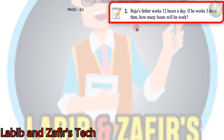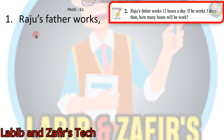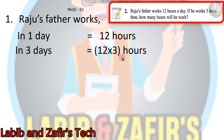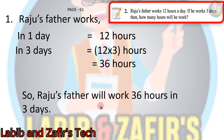Our first word problem is from page 61, word problem 2: Raju's father works 12 hours a day. If he works 3 days, then how many hours will he work? Raju's father works 12 hours in one day, so in 3 days he works 12 into 3 hours. That is 36 hours — 3 into 2 equals 6, and 3 into 1 equals 3. So Raju's father will work 36 hours in 3 days.